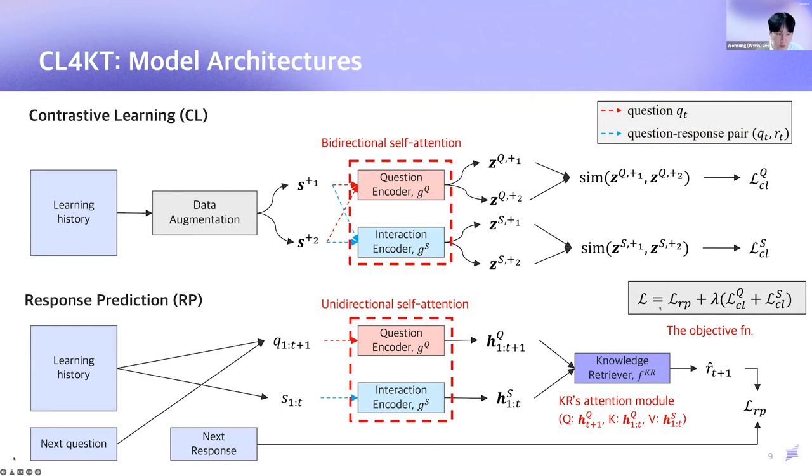The final objective function is the combination of response prediction loss and contrastive loss. The hyperparameter lambda controls the influence of self-supervised learning signals.